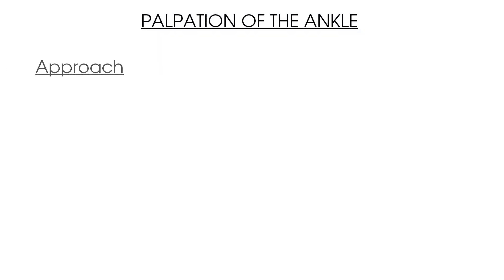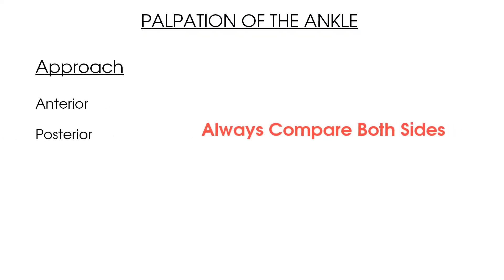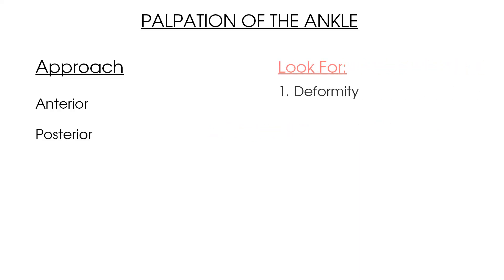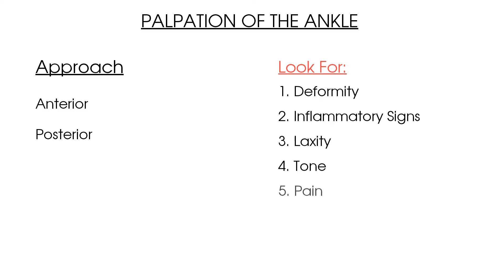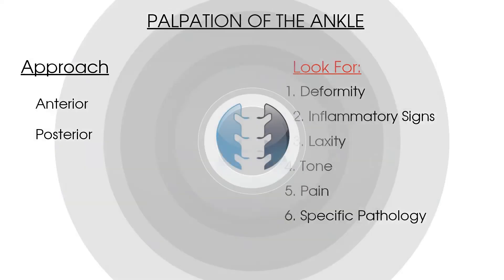Here are the key points to summarize palpation of the ankle joint: break down your palpation into anterior and posterior views ensuring you compare the affected and unaffected sides. When palpating, look for deformity, swelling, laxity, tone, and most importantly pain. You can also look for signs of specific pathology in each view as discussed throughout the video. From here, we suggest looking at our other Clinical Physio videos on observation of the ankle and resisted tests of the ankle.